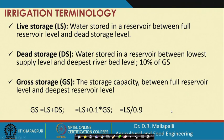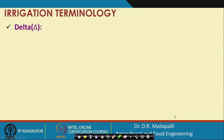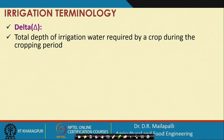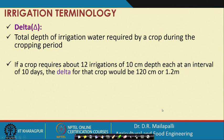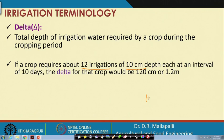Delta is the total depth of irrigation water required by a crop during the base period (from first to last water application before harvesting). For example, if a crop requires 12 irrigations of 10 cm depth each, then delta = 12 × 10 = 120 cm = 1.2 m. So 120 cm or 1.2 m is the delta for that crop.